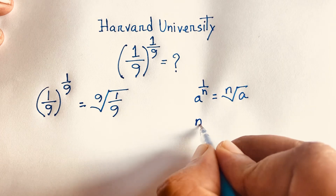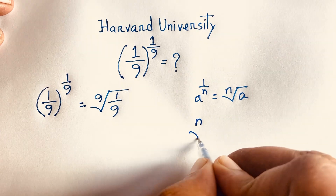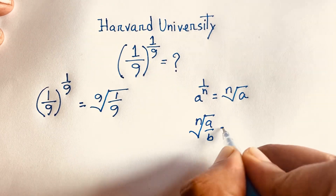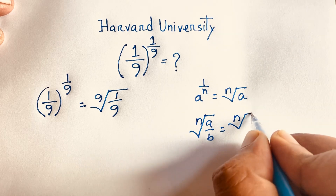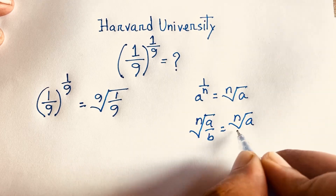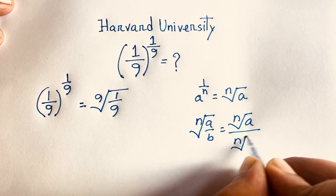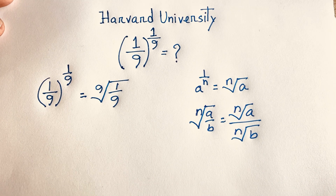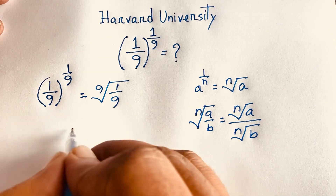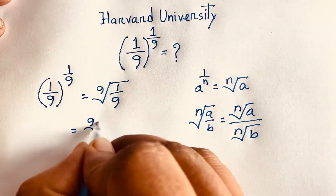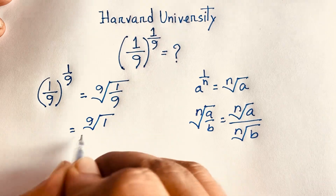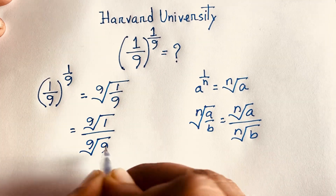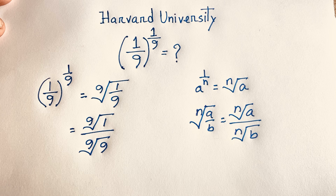Now we know another law: the n-th root of (a/b) equals the n-th root of a over the n-th root of b. According to this law, this expression will be the 9th root of 1 over the 9th root of 9.